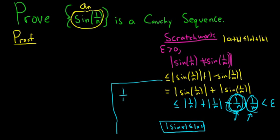We want 1 over n to be less than epsilon over 2. Multiplying both sides by 2 and by n gives 2 less than n·epsilon. Dividing by epsilon gives 2 over epsilon less than n, or equivalently n greater than 2 over epsilon.